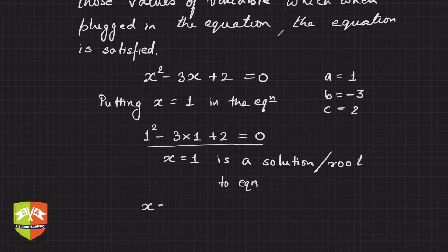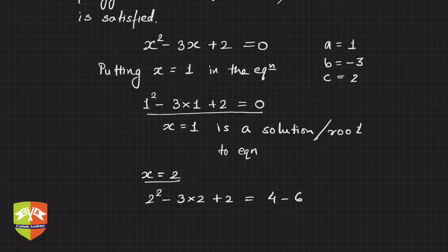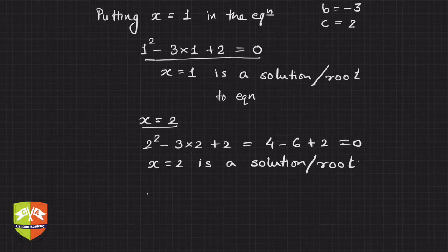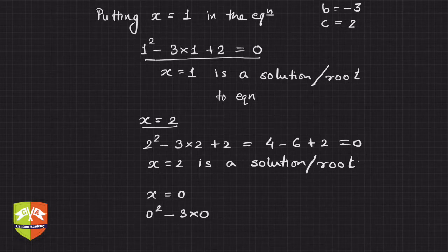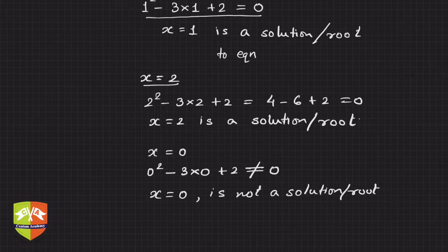Similarly, let us put x = 2 into the same equation. We get 2² - 3(2) + 2 = 4 - 6 + 2 = 0, which again equals zero, so x = 2 is also a solution or root. Now let us try x = 0. We get 0² - 3(0) + 2 = 2, which is clearly not equal to 0. So x = 0 is not a solution or root of x² - 3x + 2 = 0.